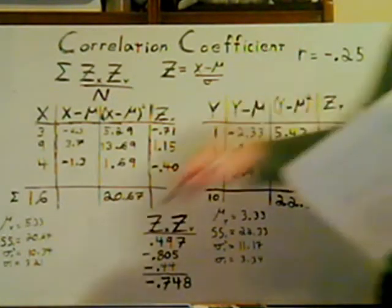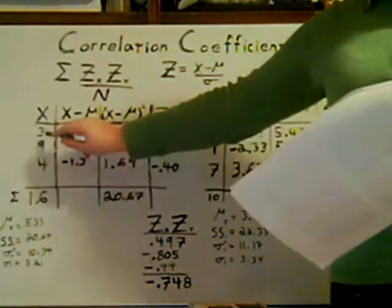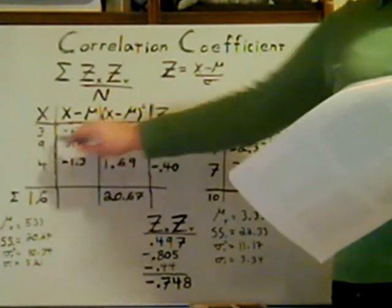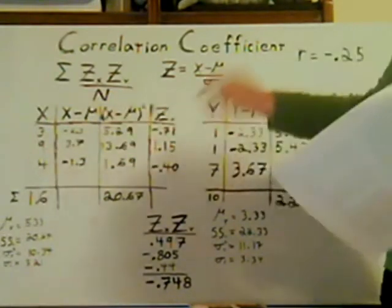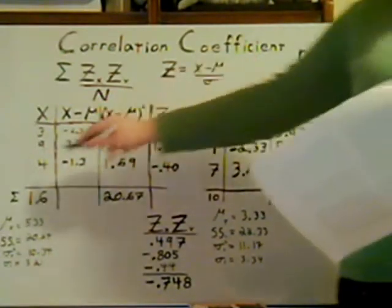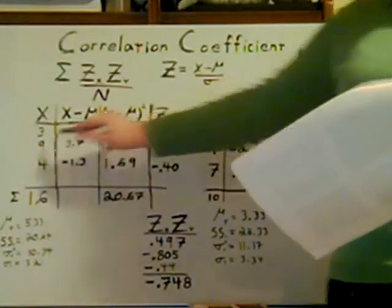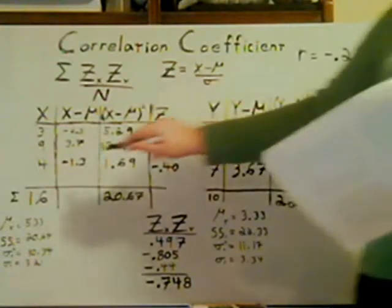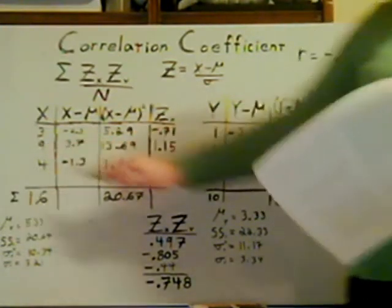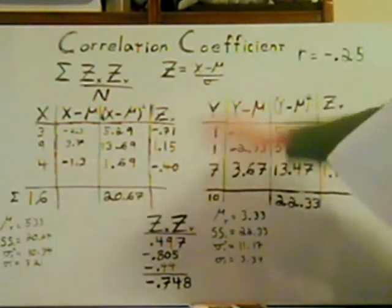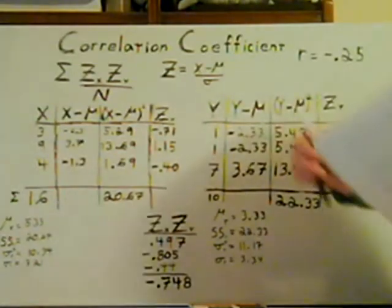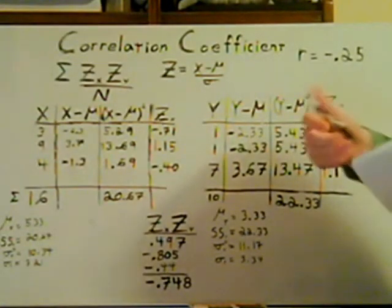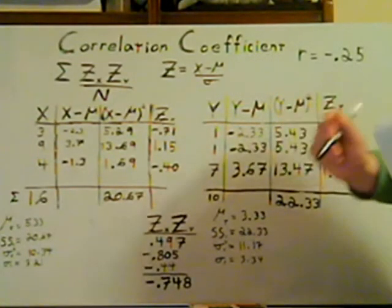Here's the data. We found that one person had three dice and one tabletop game. A second person had nine dice and one tabletop game. And a third person had four dice and seven tabletop games. Doesn't look like there's any correlation, but let's let the math speak for itself.